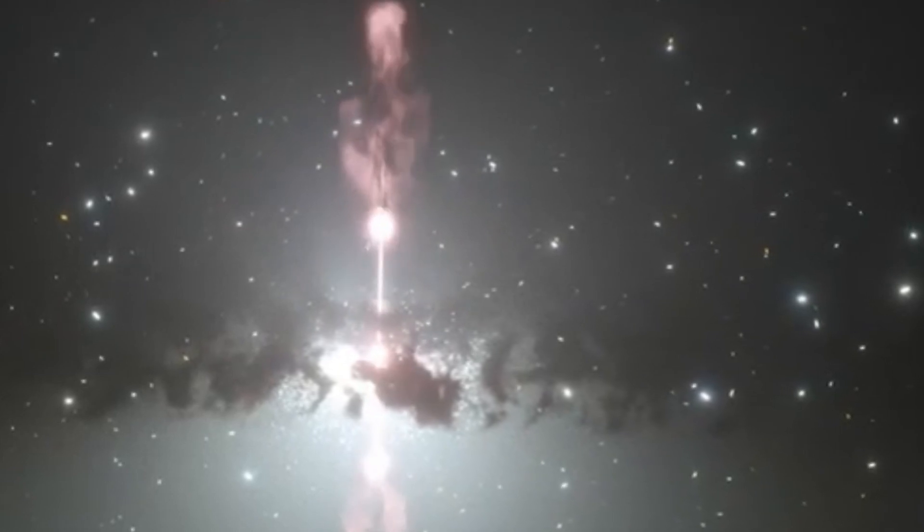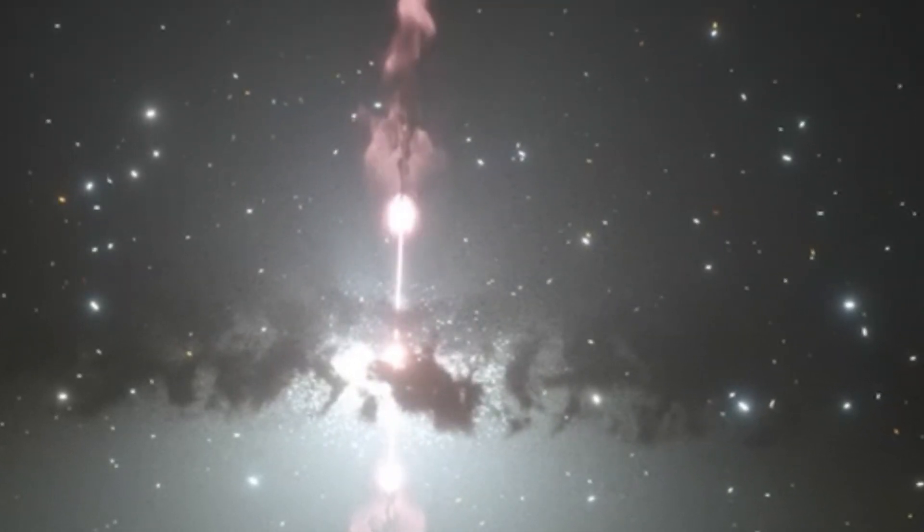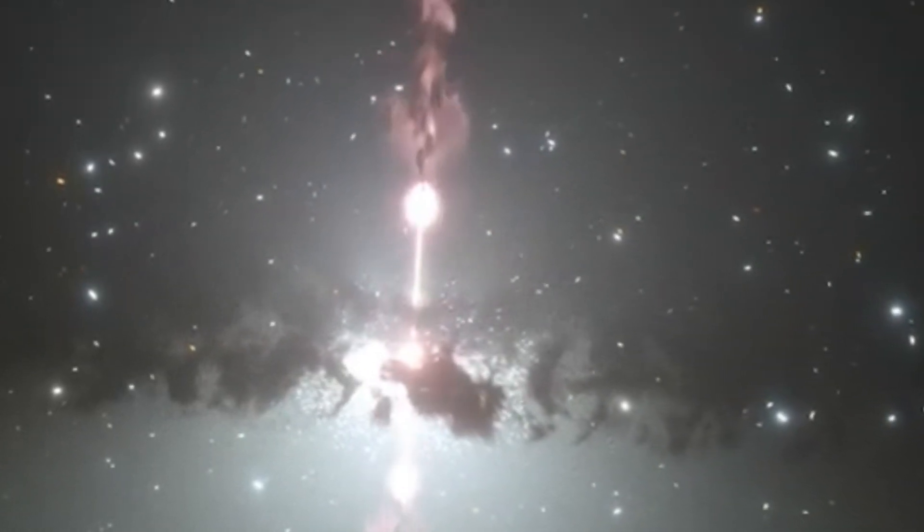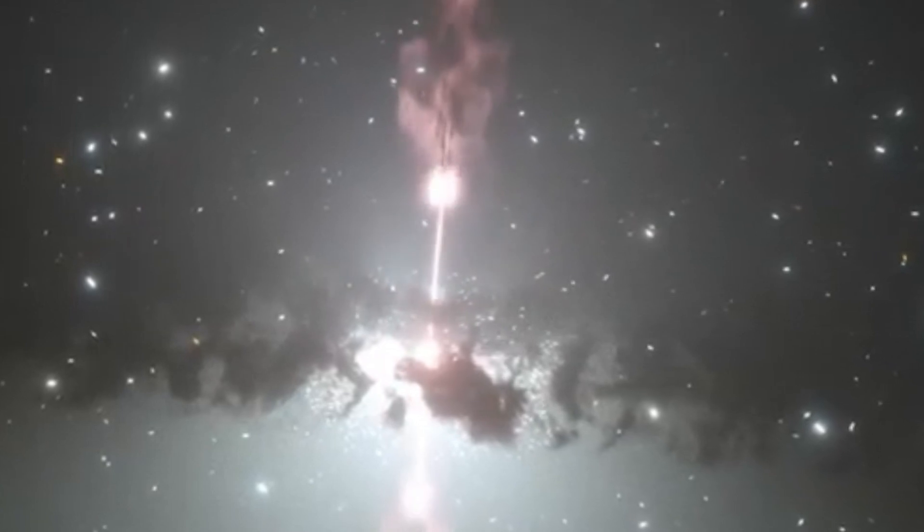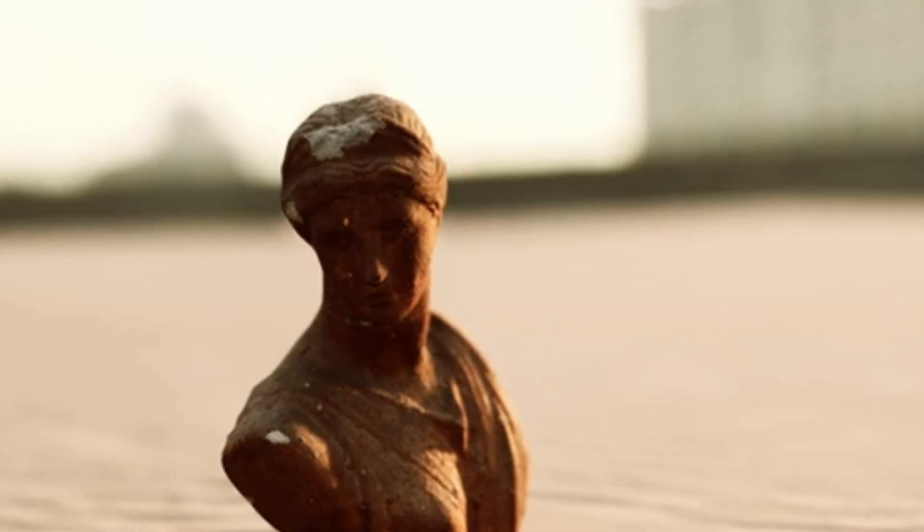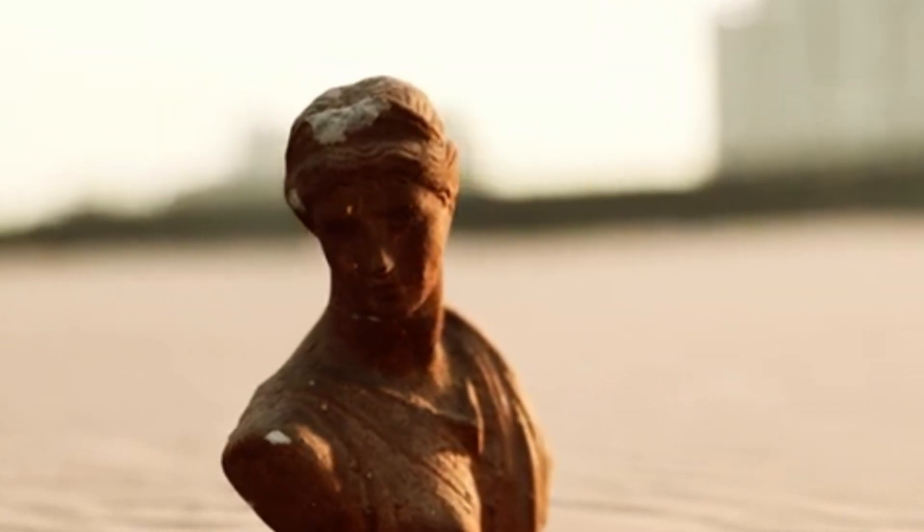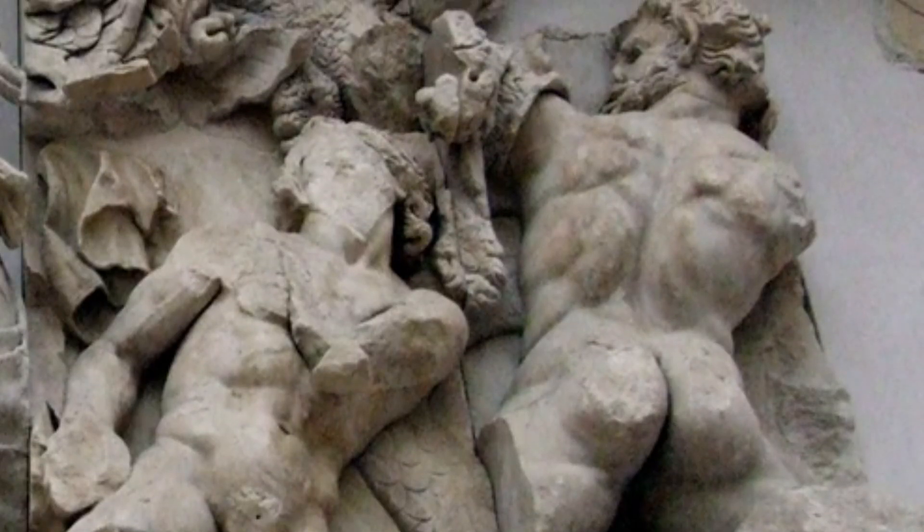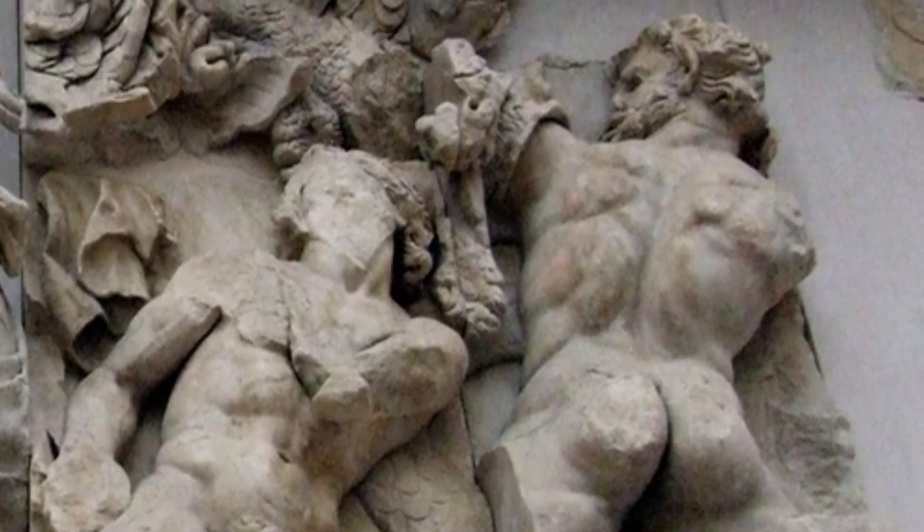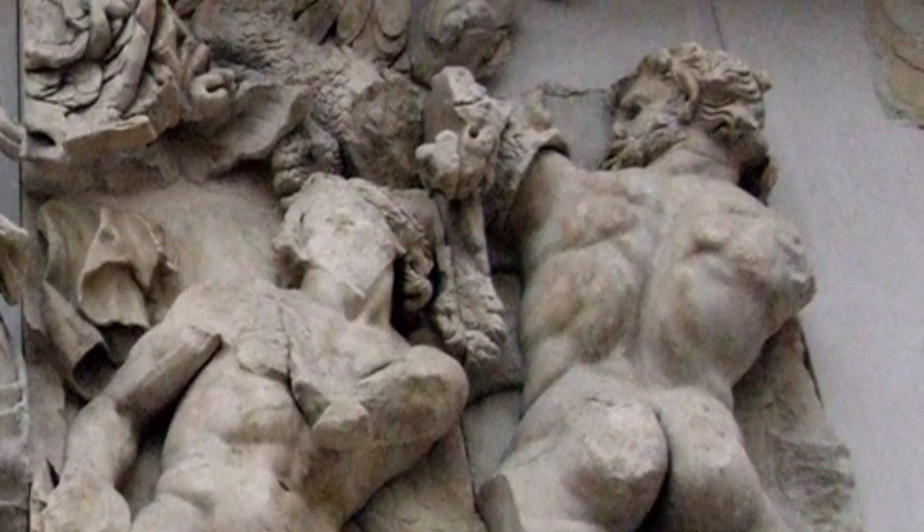Interestingly, Porphyrion's sibling in mythology, Alcyoneus, lends his name to the next largest set of black hole jets, which were discovered in 2022 by the same team of scientists. Alcyoneus' jets span around 100 Milky Ways, but Porphyrion completely dwarfs that.